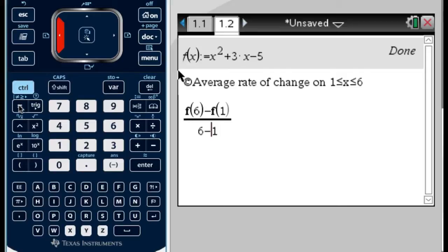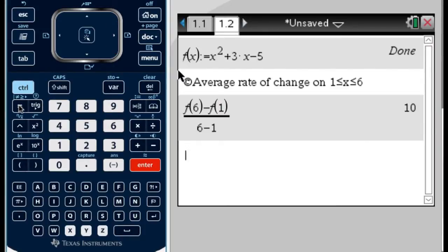And if you just make sure that these are in the same order, so 6 comes first here, 6 comes first here, and so on, you're going to get it right. So if I press enter, it gives me 10. So the average rate of change is 10 on the interval from 1 to 6.